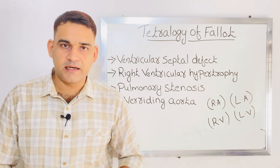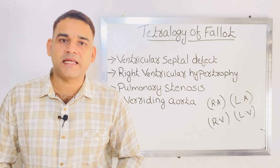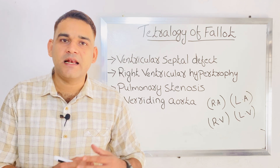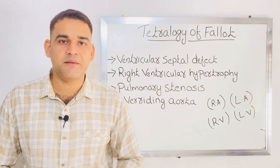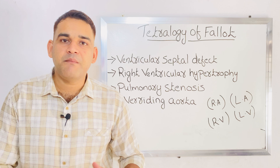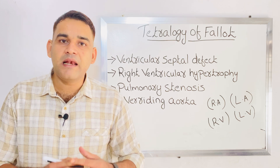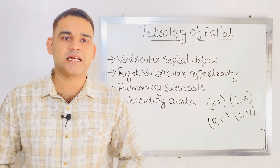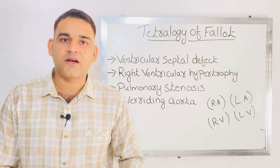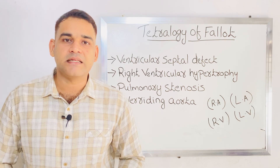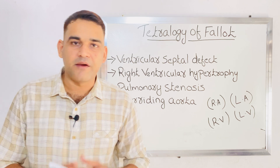So, what is meant by Tetralogy of Fallot? Tetralogy of Fallot is a congenital heart disease. That means, by birth, this defect is occurring. Mainly, four conditions are coming under Tetralogy of Fallot. We can see them one by one.